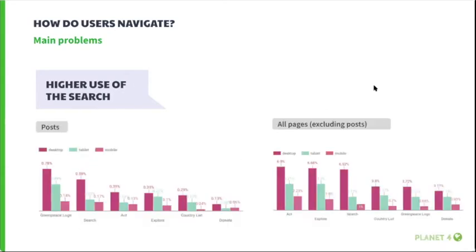There is a higher use of search on post pages rather than navigation menu items. Usually people rely on navigation menus first because it's easier and faster to click links than to use search. This could indicate that users couldn't find what they were looking for on the page or in the information architecture. However, search has similar usage to 'Act' and 'Explore' on all other pages, so this problem is really specific to post pages.